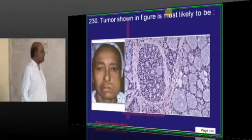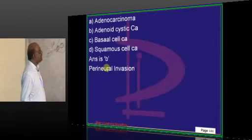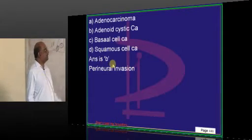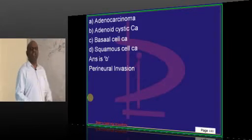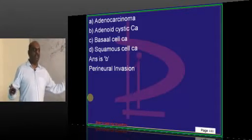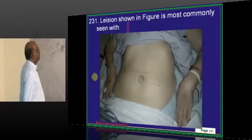There is a tumor of the parotid and typically adenocystic appearance is being shown. Adenocystic is known to lead to development of a perineural invasion among the parotid tumors. Remember, parotid tumors is a very high-yield topic. Invariably, every NEET-PG exam, you expect one question.